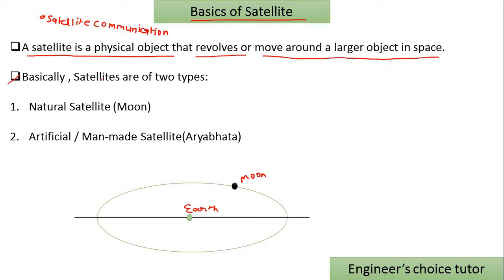Basically, if we talk about satellites, there are two types: one is our natural satellite, and the other is our artificial or man-made satellite. Our natural satellite is the moon. Our artificial satellite is man-made — it is made by humans and then sent into space, where it moves around our planet. For example, INSAT is an artificial satellite; we send it from a rocket into space, and then it revolves around Earth.